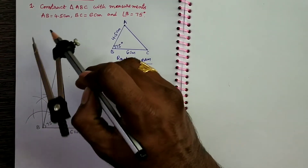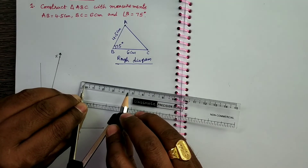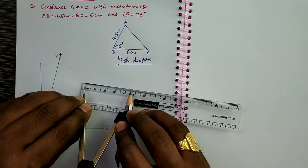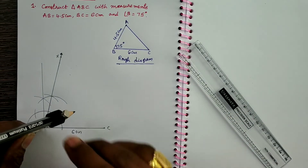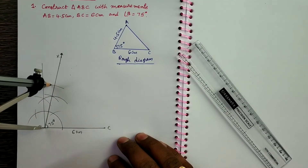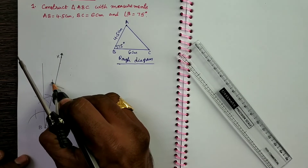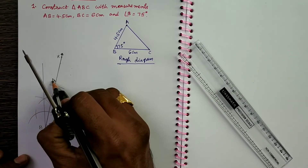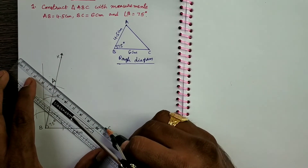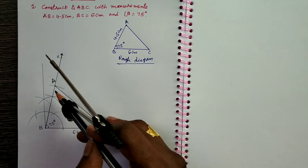Next, for AB length: AB = 4.5 cm. Take a compass, keep the compass point at 0 and the pencil point at 4.5 cm. Take this as the radius. With B as center and 4.5 cm as radius, draw an arc. It intersects ray BX at point A. So this point represents A.